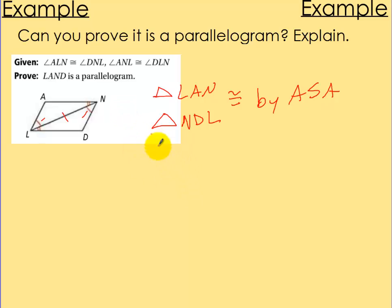Because of that, we can say corresponding parts are congruent. So what I can say here is that A-N is congruent to L-D. A-N and L-D because of corresponding parts. So make some tick marks. And I can also say A-L is congruent to D-N. So I'm going to do three tick marks. So A-L is congruent to D-N. Same thing for corresponding parts.